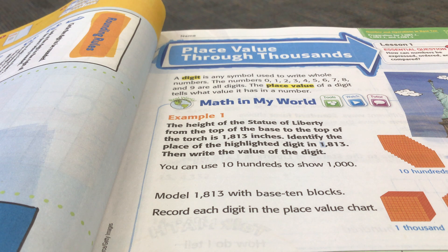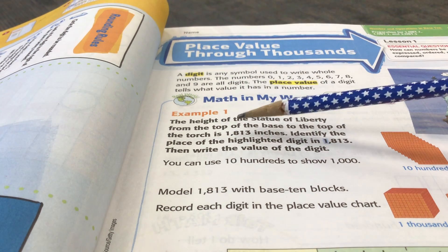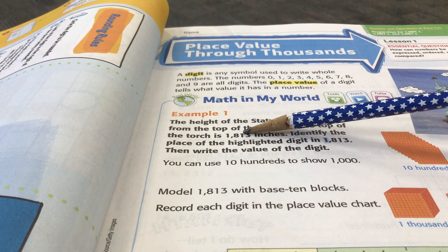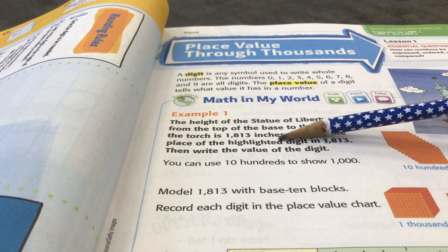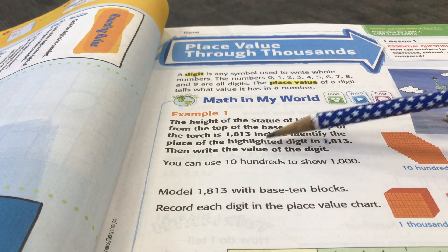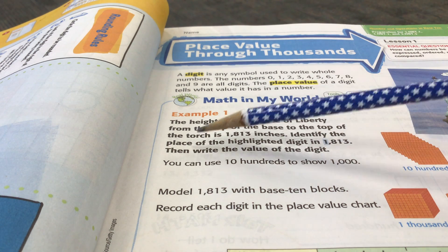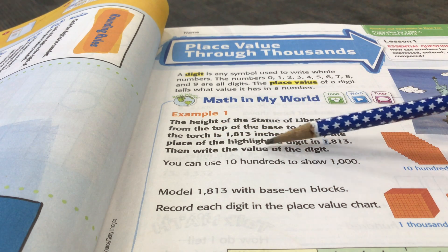The place value of a digit tells you what value it has in a number. In math in my world, the height of the Statue of Liberty from the top of the base to the top of the torch is 1,813 inches. Identify the place value of the highlighted digit in the 1,000 and then write the value of the digit.